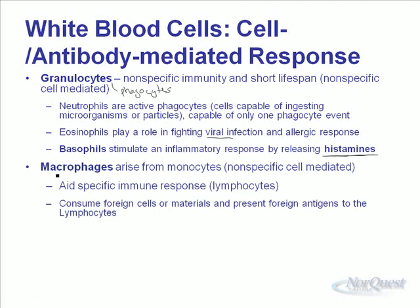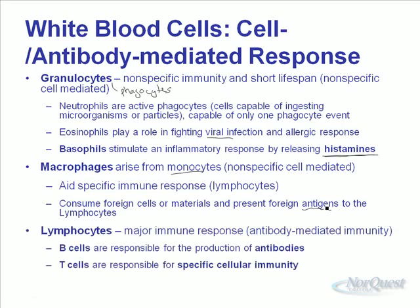Macrophages are another type of phagocyte that arise from monocytes — a nonspecific cell-mediated response — but they also aid the specific immunity response. They help lymphocytes by saving things called antigens. When a macrophage consumes a foreign cell or foreign material, it saves a little bit of its protein called an antigen and presents it to lymphocytes. The lymphocytes then respond to that specific infection. Based on what the macrophage presents, specific lymphocytes are activated to fight off the infection. B cells are responsible for producing antibodies, and T cells provide a cellular response to a specific pathogen.